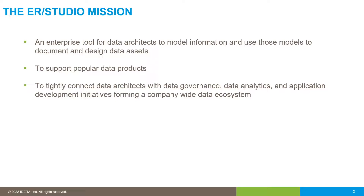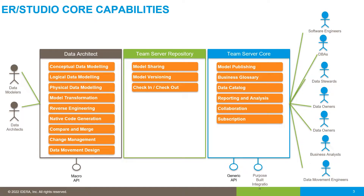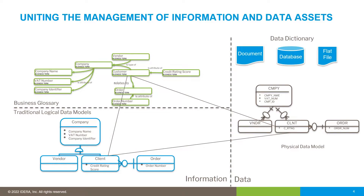There's also a secondary mission to connect data architects with other teams around the organization — namely data governance and data analytics teams — forming a single company-wide data ecosystem so everyone is collaborating and getting consistent answers. ER Studio has three components: Data Architects (the thick client tool), Team Server repository for sharing and versioning models, and the web-based Team Server core for publishing models to stakeholders, building business glossaries, data catalogs, and integrating with tools like Collibra.